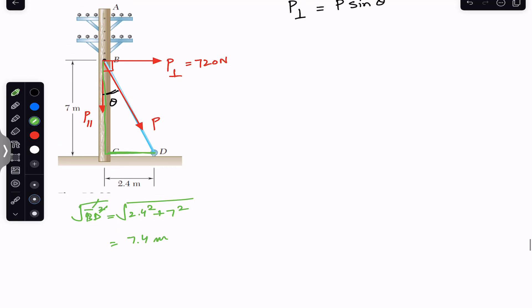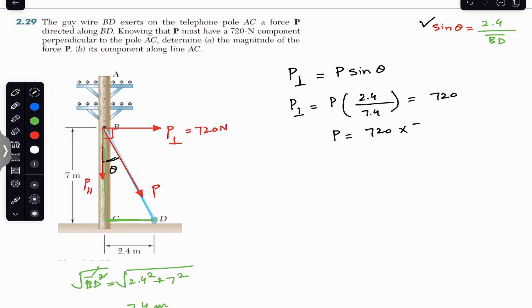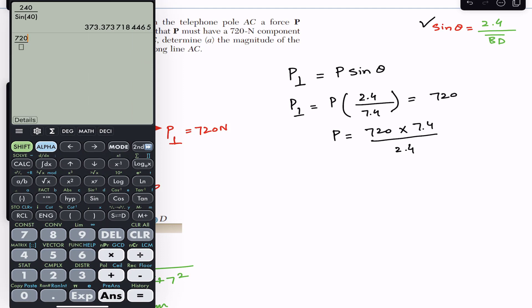From this right angle triangle, sine of theta is the perpendicular divided by the length of the wire, the hypotenuse. So P perpendicular equals P times sine of theta, which is 2.4 divided by BD length 7.4. The magnitude of P perpendicular is given as 720 Newtons. Cross multiplying gives P magnitude equals 720 multiplied by 7.4 divided by 2.4, which is 2220 Newtons.